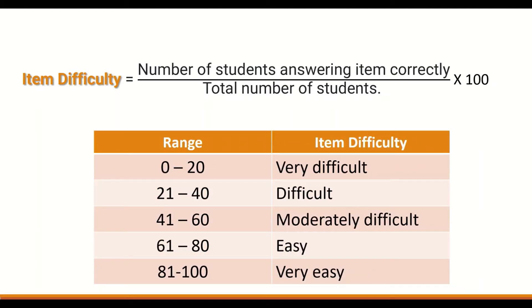The table below classifies questions according to item difficulty value. A range between 0 and 20% is considered very difficult. From 21 to 40% is difficult. From 41 to 60% is moderately difficult. From 61 to 80% is easy. And a p-value greater than 81% is considered a very easy question. These are the criteria to classify questions based on item difficulty.